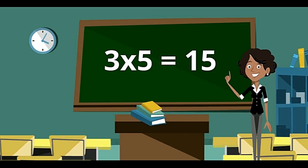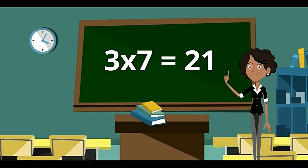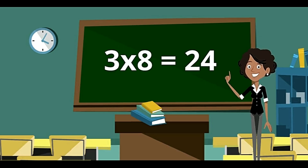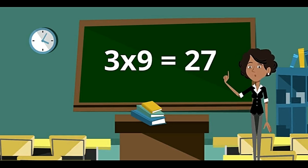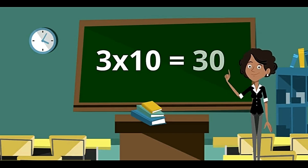3 fives are 15. 3 sixes are 18. 3 sevens are 21. 3 eights are 24. 3 nines are 27. And 3 tens are 30.